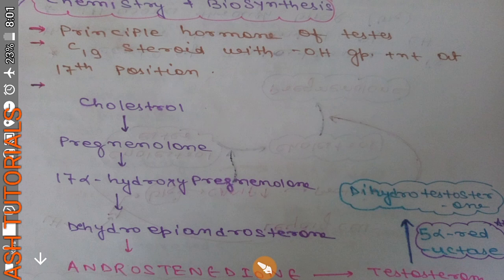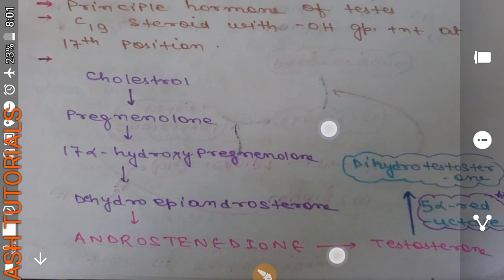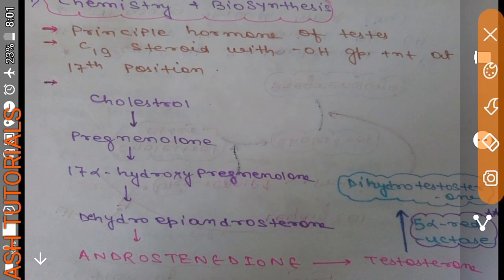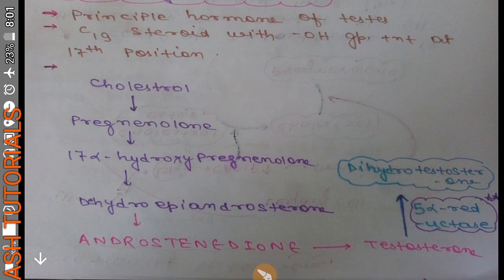DHEA is converted into androstenedione. Androstenedione then leads to the formation of testosterone. In some tissues and cells, testosterone is further converted into dihydrotestosterone (DHT) by the enzyme 5-alpha-reductase, which we will discuss in more detail in the mechanism of action of testosterone.